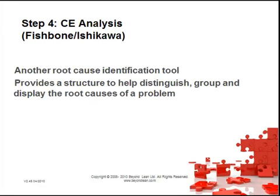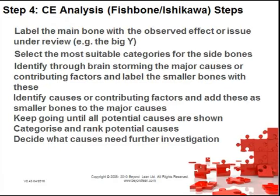Next we'll look at cause and effect analysis. This is another root cause identification tool that provides a structure to help distinguish, group and display the root causes of a problem. To carry out cause and effect analysis: label the main bone with the observed effect or issue under review; select the most suitable categories for the side bones; identify through brainstorming the major causes or contributing factors and label the smaller bones with these; identify causes or contributing factors and add these as smaller bones to the major causes; keep going until all potential causes are shown; then categorise, rank potential causes and decide what needs further investigation.